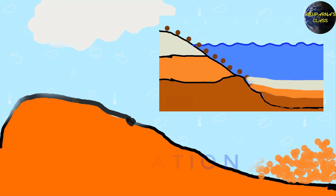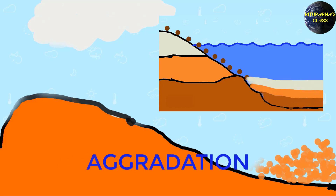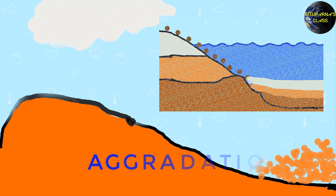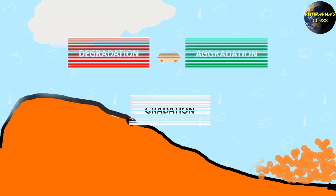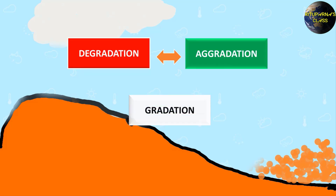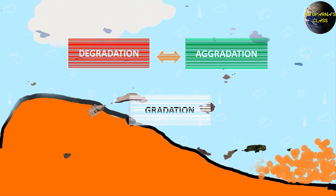This process is known as aggradation. Together these two processes are known as gradation. Degradation and aggradation together are known as gradation.